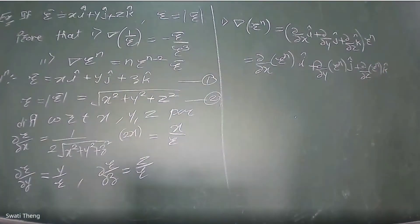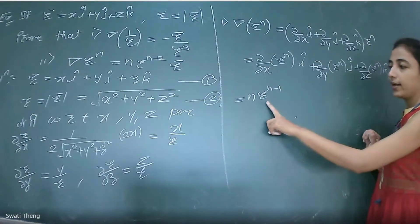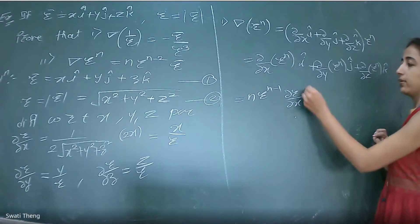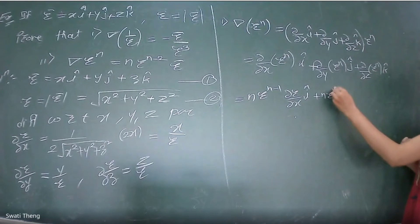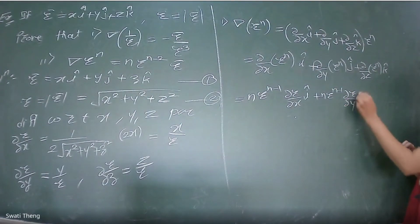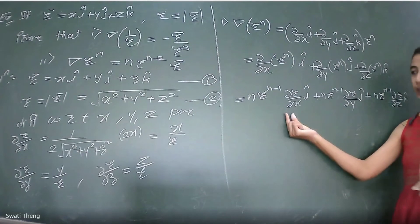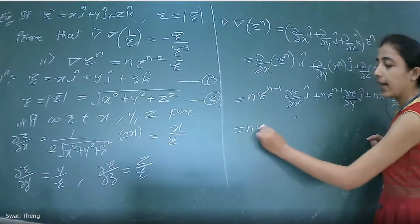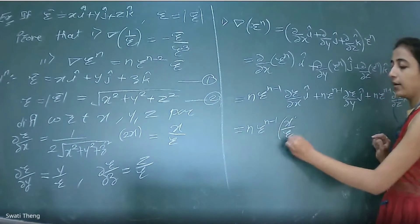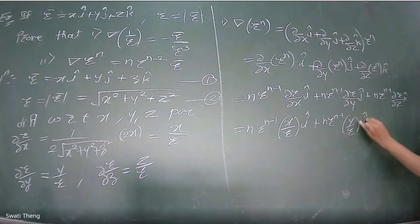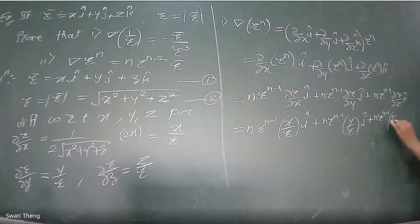Similarly for remaining terms: n·r^(n-1)·∂r/∂y ĵ and n·r^(n-1)·∂r/∂z k̂. Substituting ∂r/∂x = x/r, ∂r/∂y = y/r, ∂r/∂z = z/r, we get n·r^(n-1)·(x/r)î + n·r^(n-1)·(y/r)ĵ + n·r^(n-1)·(z/r)k̂. Taking n·r^(n-2) common, the remaining terms are x î + y ĵ + z k̂, which is r̄. Therefore ∇(rⁿ) = n·r^(n-2)·r̄.